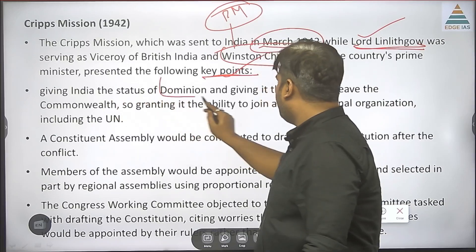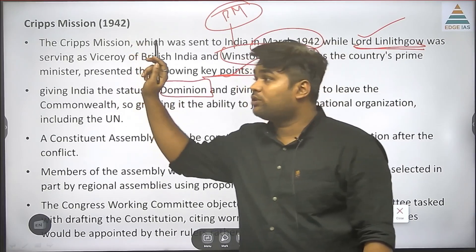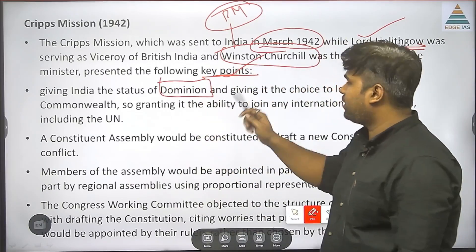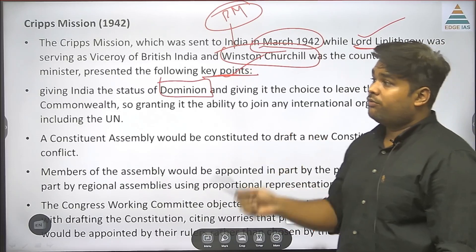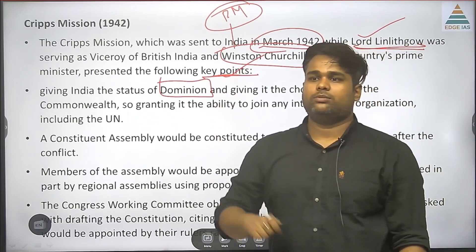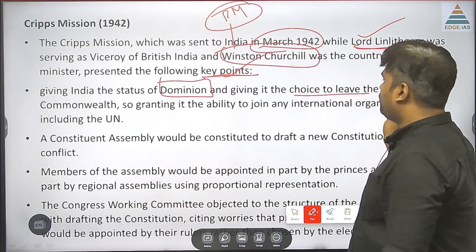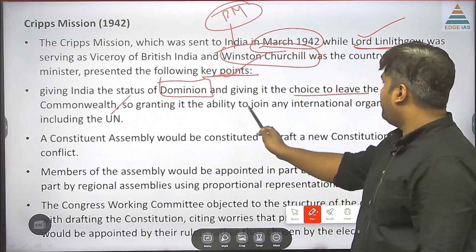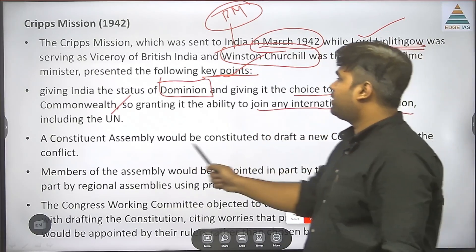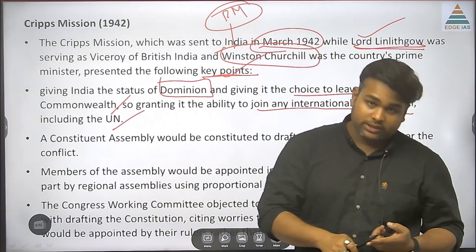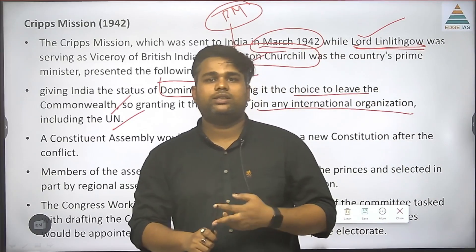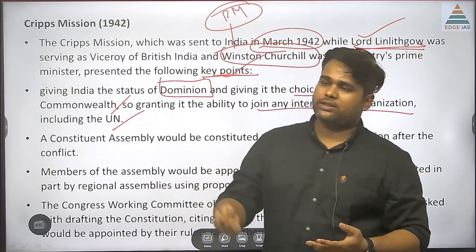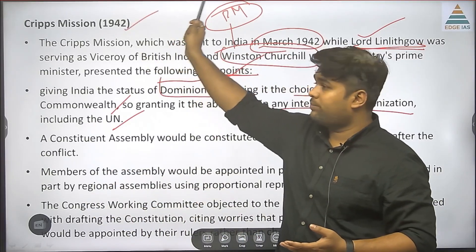The Cripps Mission proposed: giving India the status of Dominion — this was the first time Dominion status was being offered, which happened in the Cripps Mission. The first time a Constituent Assembly was mentioned was in the August Offer. The mission also offered the choice to leave the Commonwealth, and the ability to join any international organization including the UN.